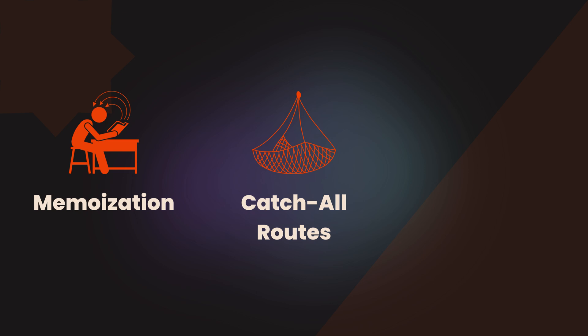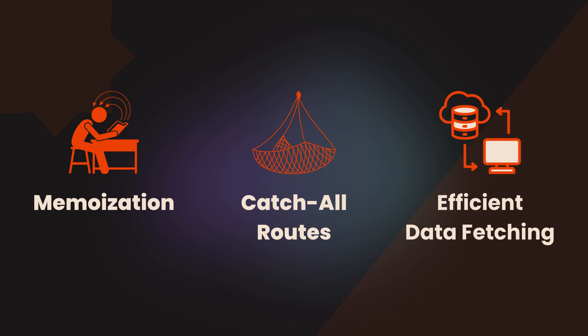Handling catch-all routes supports deeply nested paths like /shop/category/product using the ellipsis syntax, allowing for more flexible routing. Efficient data fetching means fetching only necessary data to keep the payload size minimal and reduce processing time. By optimizing these processes, we can balance performance, scalability, and flexibility. Understanding these optimizations will help in building efficient applications without overwhelming server resources.